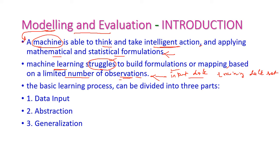If the number of observations is very limited, then this is a very big issue of building a new formulation, that is the target function or the mapping function. When we come to the learning process of your machine, it can be divided into three parts. First one is input data, second one is abstraction, and third one is generalization. We will see these things with a very suitable example.